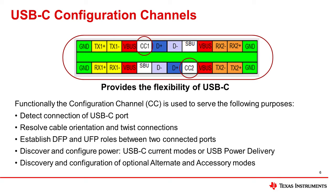So how is port configuration set up with USB Type-C? The USB Type-C port configuration is achieved with the CC1 and CC2 pins. Functionally, the configuration channel (CC) serves the following purposes in sequential order: first, detecting the connection of a USB Type-C port; second, resolving cable orientation and twist connections; third, establishing DFP and UFP roles between the two connected ports; fourth, discovering and configuring power in USB-C current modes or USB power delivery modes; and finally, discovery and configuration of optional alternate and accessory modes, which we'll be discussing later in this video.